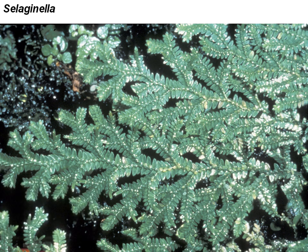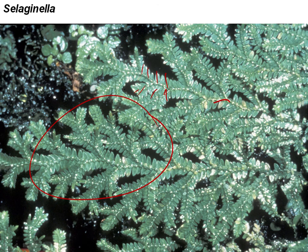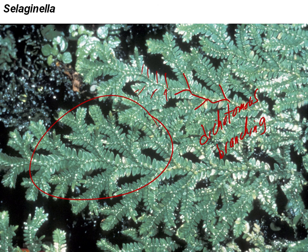Here's Selaginella. You can see distinctive characteristics: the leaves are very flat in a flat plane and relatively small. Look at this kind of branching — here it comes up and branches into two, here it branches into two again. So there is dichotomous branching in Selaginella, as there is in much of Isoetes and in Lycopodium. Lycopodium branches dichotomously also, but it's more evident in Selaginella.